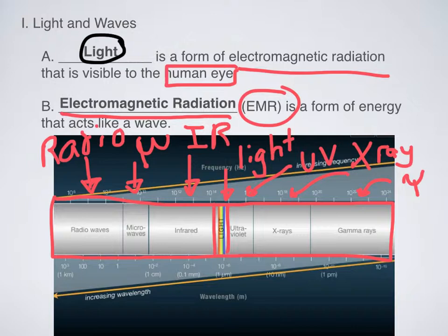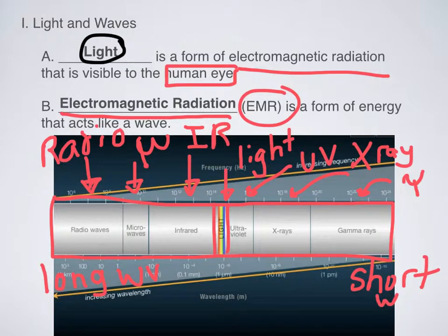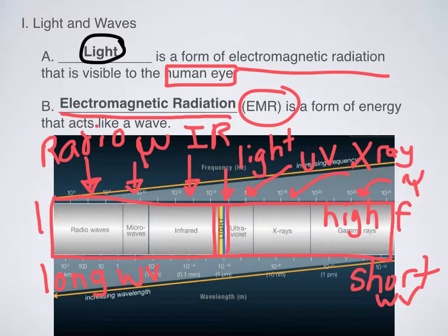Why do I want you to know these in order? It's because of the amount of energy they have. We need to know the relationship between frequency and wavelength. Over here on the left we have very long wavelengths, and over here on the right we have very short wavelengths. Frequency-wise, we have very high-frequency waves on one end and very low-frequency waves on the other. Make sure you write those down and fill those in.